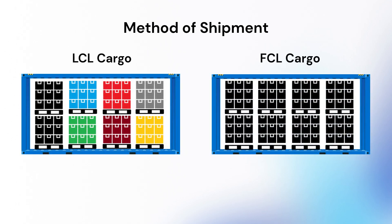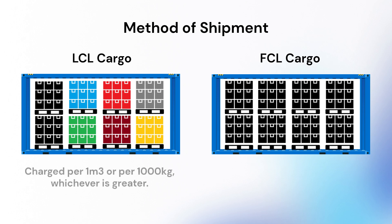When the cubic volume and weight of the cargo is known, an importer should understand the best method of shipping and the freight costs to move the cargo. If the total cubic measurement of the cargo is relatively small, then LCL shipping may be used. LCL shipping will be charged based on the exact cubic size or weight of the cargo — the freight company will charge per one cubic metre or per 1,000 kilograms, whichever is greater. LCL can be a good option when shipping only a few pallets of cargo.